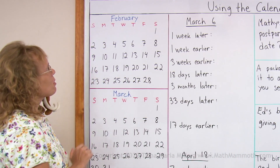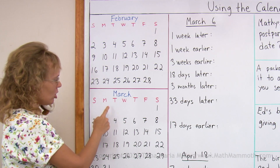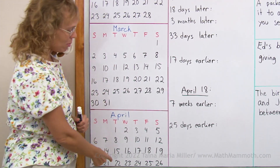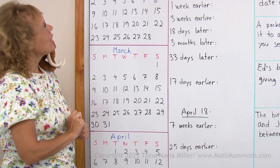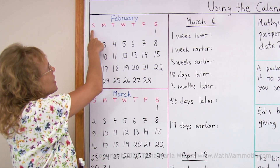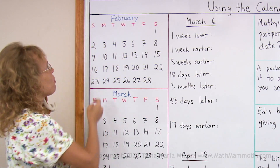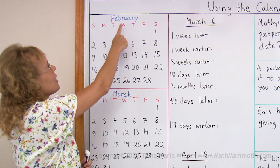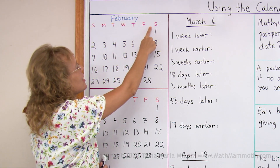Here I wrote on the board February and March and part of April — April didn't fit all of it. And you see these letters here: S, M, T, W and so on. Those are for the days of the week: Sunday, Monday, Tuesday, Wednesday, Thursday, Friday and Saturday.